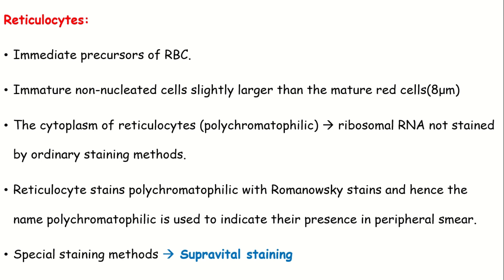The reticulocyte is a non-nucleated cell with polychromatophilic appearance. On normal staining methods, we have to stain the ribosome. So why is it called polychromatophilic? Because on a normal blood smear, to demonstrate the color of reticulocyte, this polychromatophilic appearance is seen. A polychromatophilic cell is a reticulocyte.